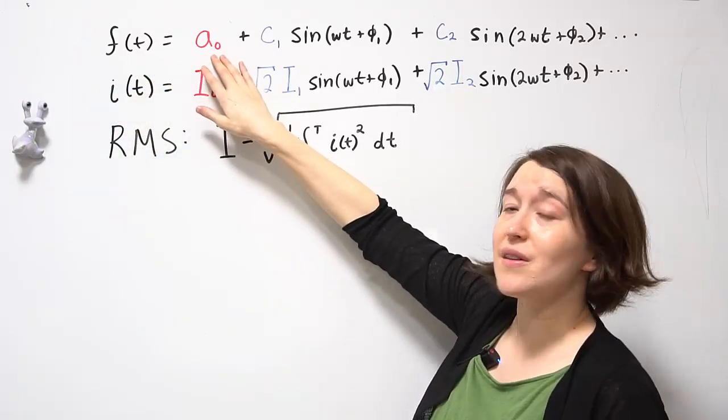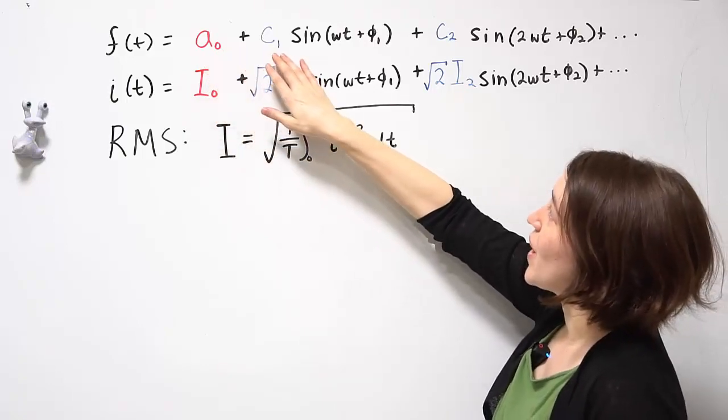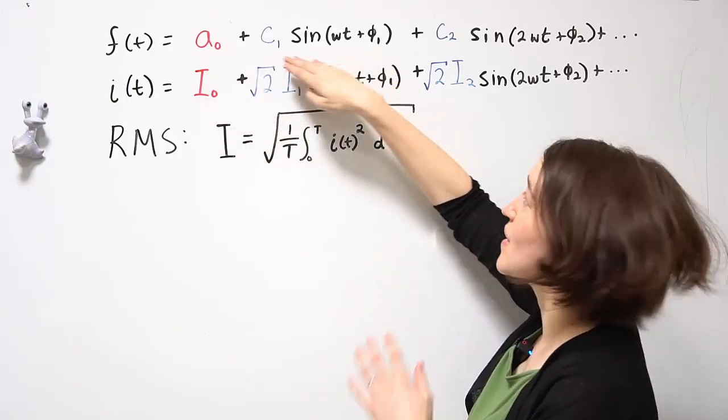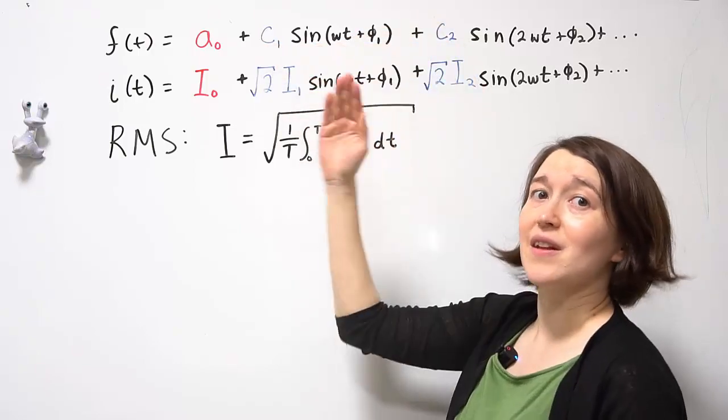We have A0, our DC term, and then we have C1 and our sine term. This is the fundamental term based on n equals 1.